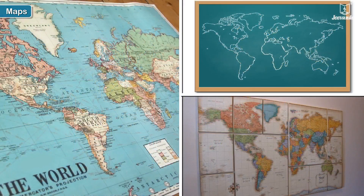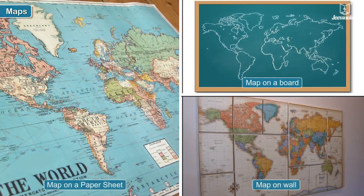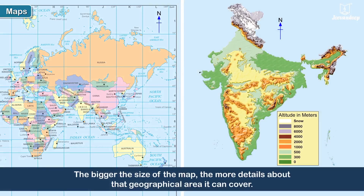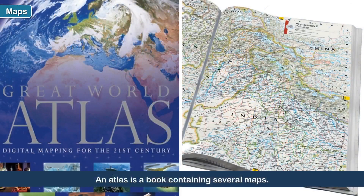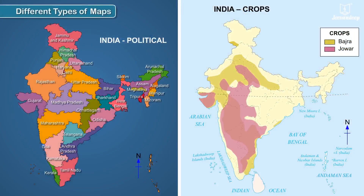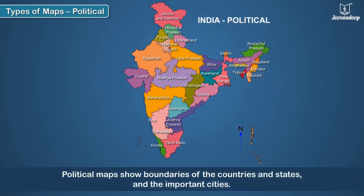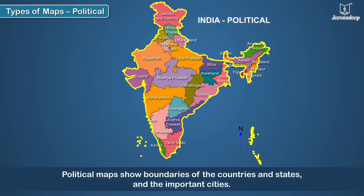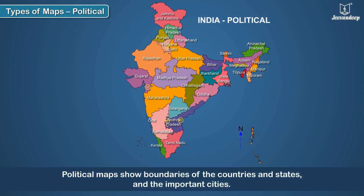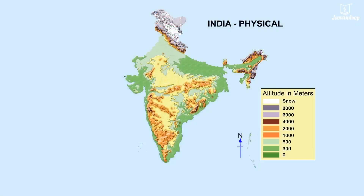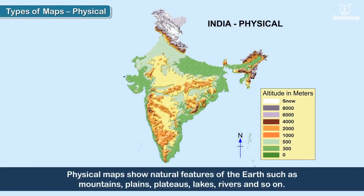A map could be on a sheet of paper, a board, or a wall. The bigger the size of the map, the more details about that geographical area it can cover. An atlas is a book containing several maps. Different types of maps include political maps, which show boundaries of countries and states and the important cities.